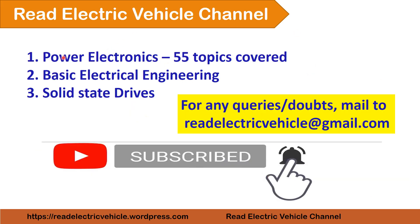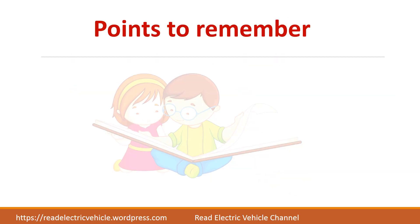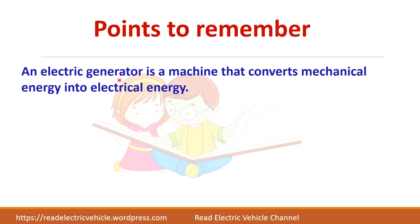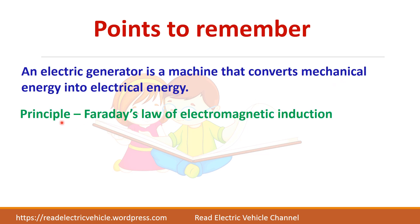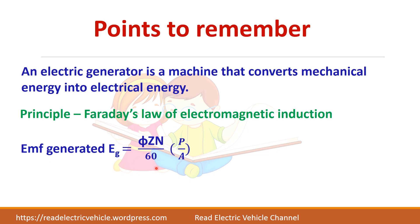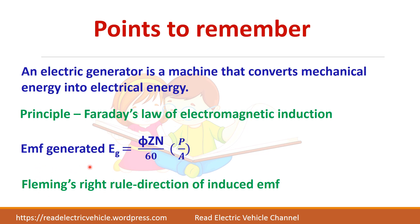To summarize the key points: a DC generator is a machine that converts mechanical energy to electrical energy, based on Faraday's law of electromagnetic induction. The generated EMF formula is EG = (φ × Z × N / 60) × (P / A). The direction of the induced EMF is given by Fleming's right-hand rule. The generator equation is EG = V + Ia × Ra. Always remember: in a generator, the generated voltage will be greater than the terminal voltage.